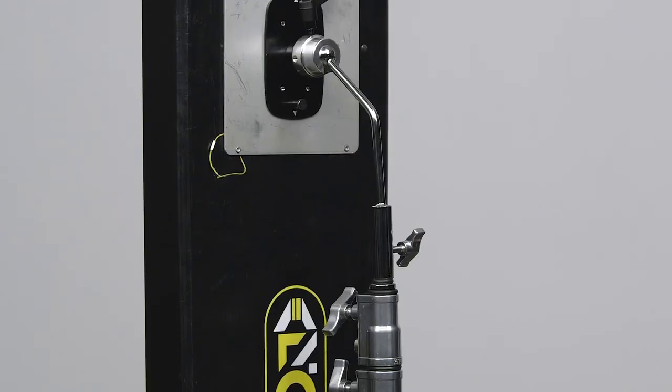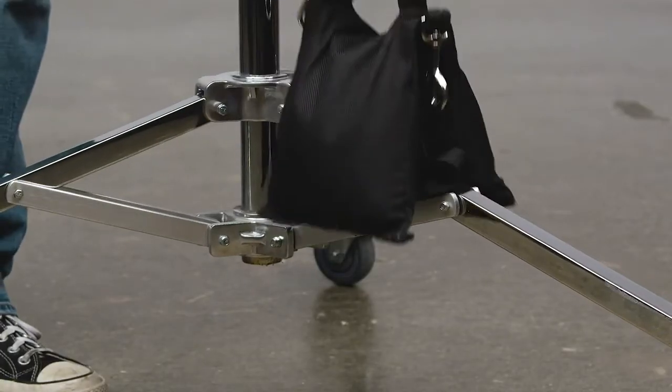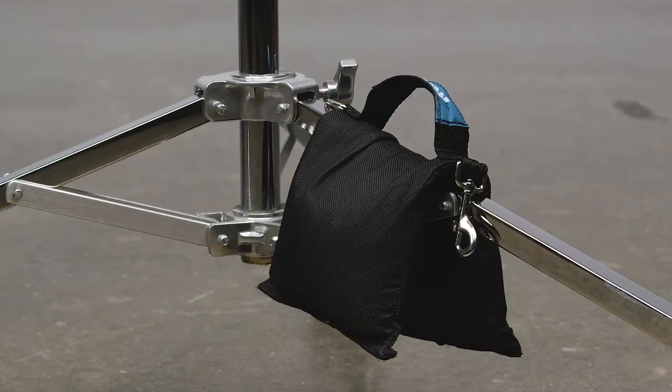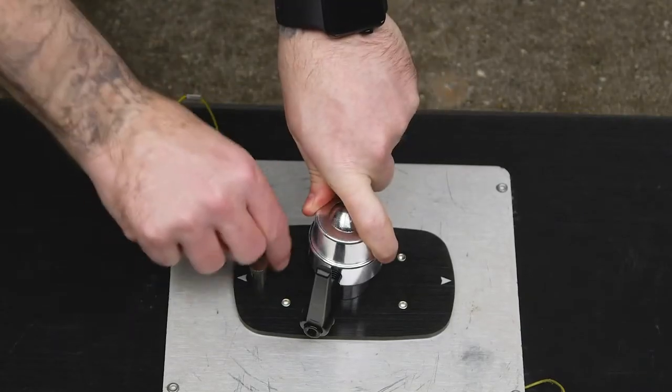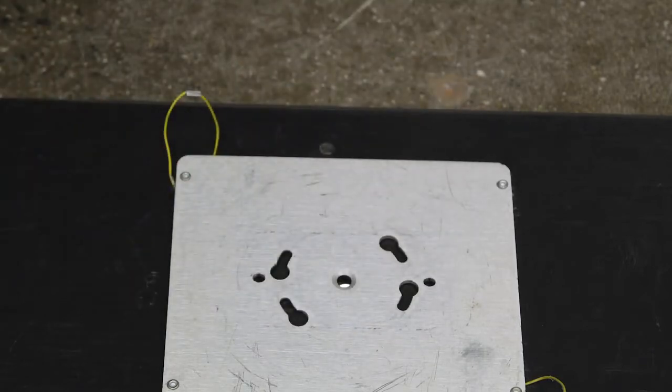Let's mount our Kino Flow fixture onto the baby top pin of a C-stand. Let's first sandbag our stand for increased stability. Let's remove our Kupo swivel mounting plate with 3⁄8 inch baby pin from our Kino Flow by pulling the spring-loaded locking pin and rotating the plate counterclockwise until it comes free.